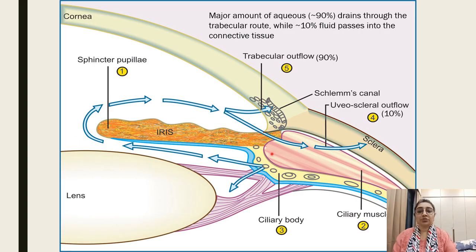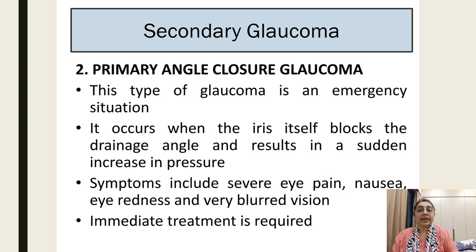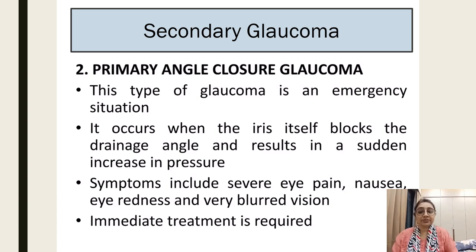When the drainage angle is blocked, drainage will be poor and intraocular tension increases. Primary angle-closure glaucoma is an emergency condition that occurs when the iris itself blocks the drainage angle, resulting in a sudden increase in pressure. Symptoms include severe eye pain, nausea, eye redness, and very blurred vision. Immediate treatment is required.